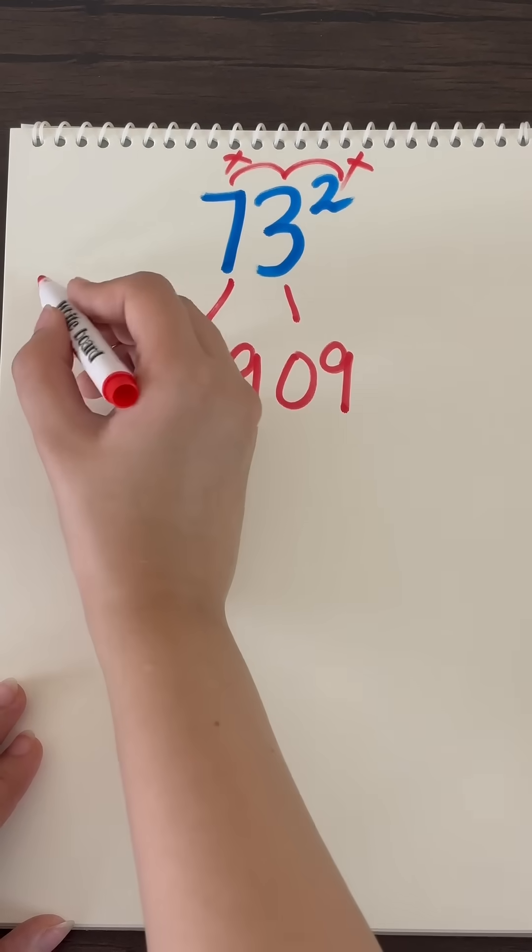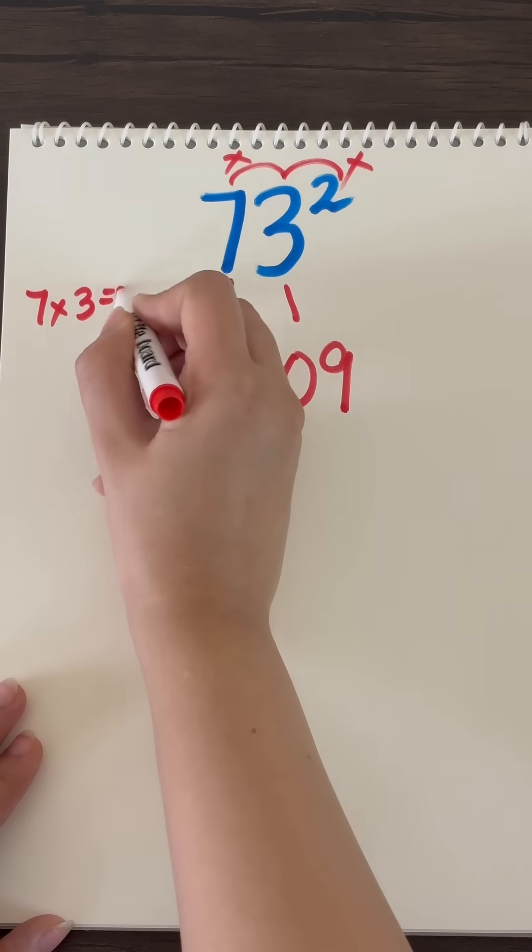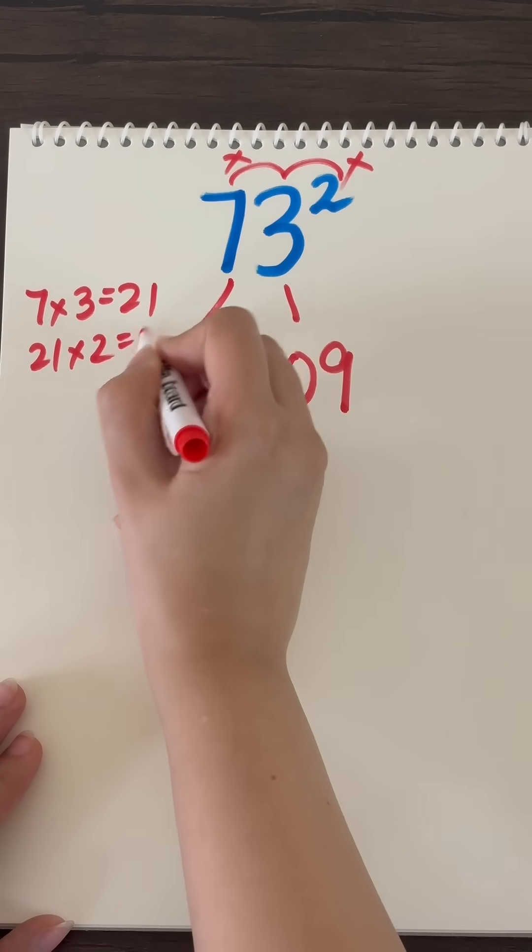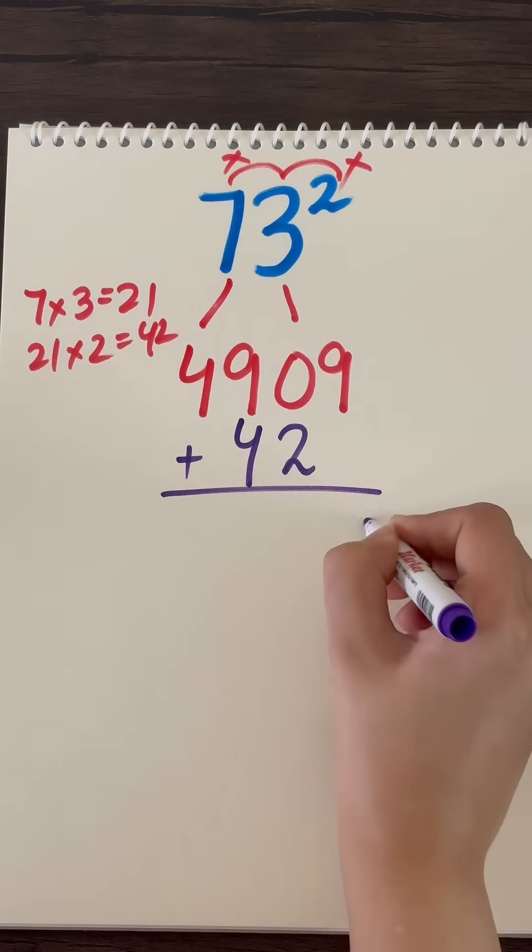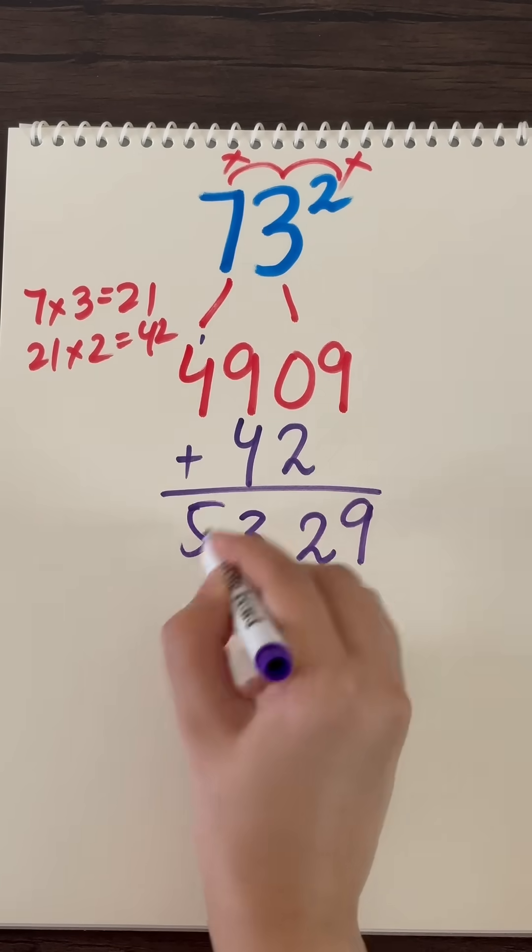Multiplying this with this and with this. So 7 into 3 is 21, and 21 into 2 are 42. Writing it below two center digits and adding everything up, you got your answer.